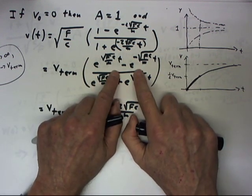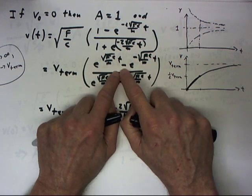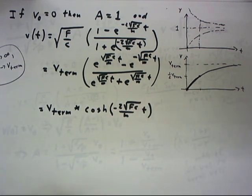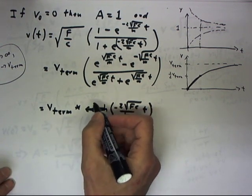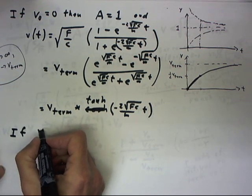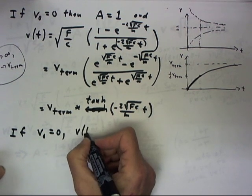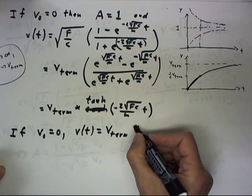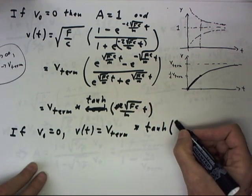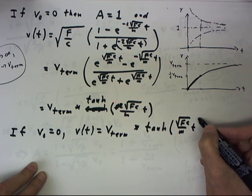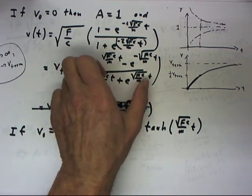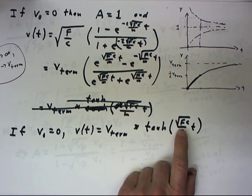This numerator function divided by 2 is the hyperbolic sine function; the denominator divided by 2 is the hyperbolic cosine function. So what we have is actually the hyperbolic tangent function. Therefore, if v₀ equals 0, then v(t) equals the terminal velocity multiplied by the hyperbolic tangent of the square root of fc over m times t. We see that this velocity function is simply v_term times tanh(√(fc/m) · t).